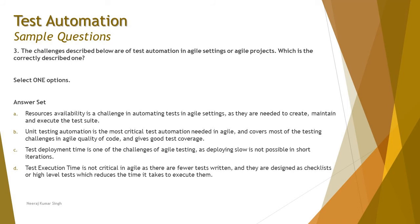Option A: resource availability is a challenge in automating tests in agile settings, as they are needed to create, maintain, and execute the test suite. From the previous tutorial, we covered challenges of automation regarding the level of automation — your automation tests get piled up due to frequent continuous integration and continuous deployment. So preparing and maintaining the test suite becomes a challenge, and having resources allocated for that is a very important parameter.